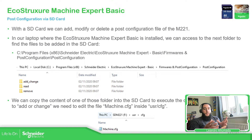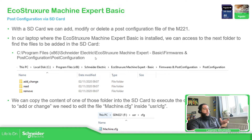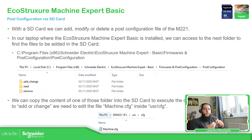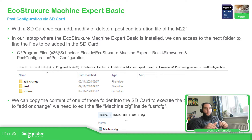The easiest way to do it by SD card is accessing this path inside the post configuration folder, where we have three specific folders: Add/Change, Read, and Remove. These are the options we have in order to generate the script to use in the SD card to generate an action in the post configuration.